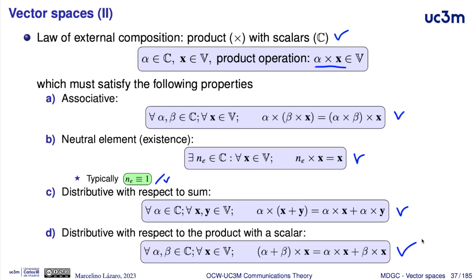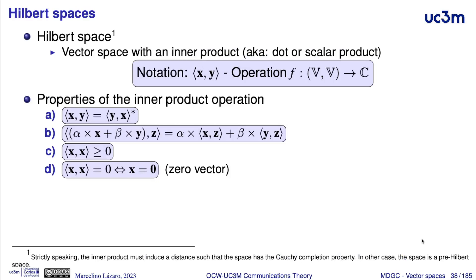This is basic theory about vector spaces. In particular, we are interested here in Hilbert spaces. The simplest way to define a Hilbert space is that it is a vector space with an inner product associated. Remember that the inner product is also known as the dot product or scalar product. The notation is like this: this is the scalar product, or inner product, between two vectors x and y, and the result of this operation applied to two vectors of the space produces a scalar — this is the reason for the name scalar product.